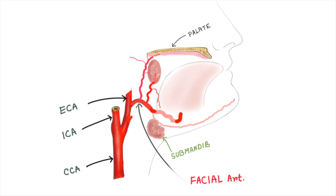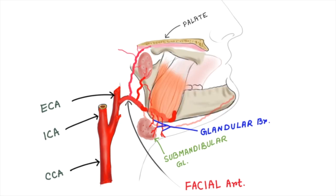The glandular branch consists of three to four large vessels which supply the submandibular gland and sometimes neighboring muscles, lymph glands, and skin.